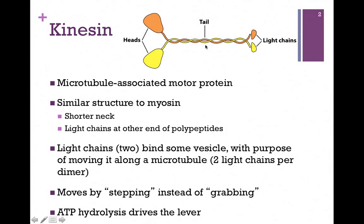With myosin, we had two light chains per neck, four per dimer. In the case of kinesin, we have one light chain per monomer, two in the dimer. The role of these light chains is to grab hold of a vesicle, and we're going to walk it from one end of the cell to the other.